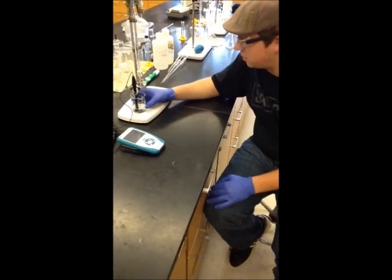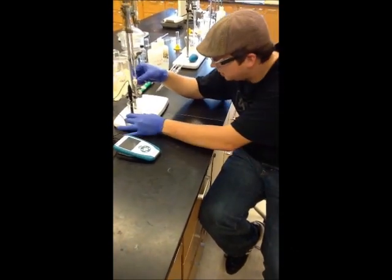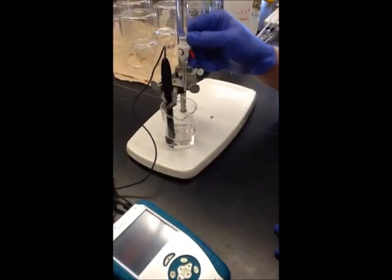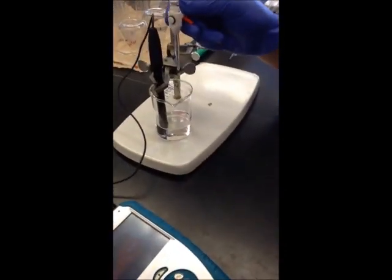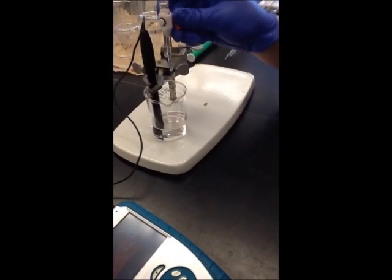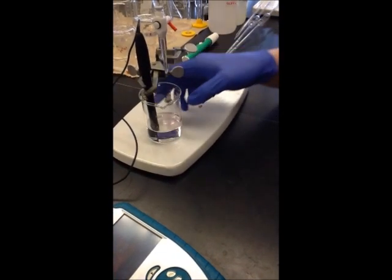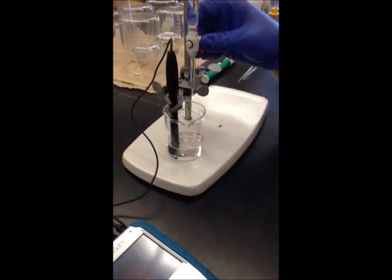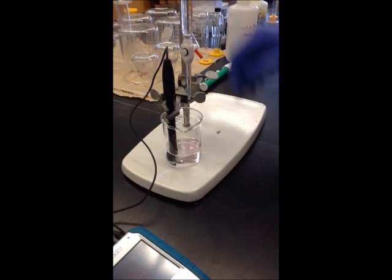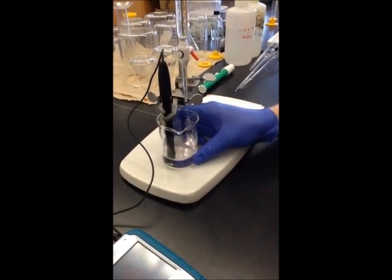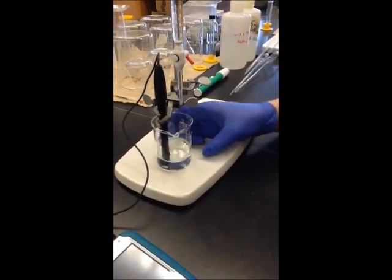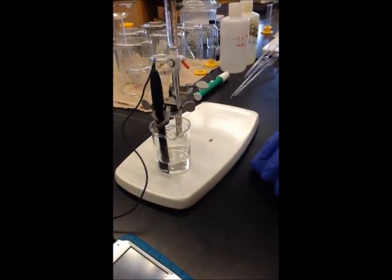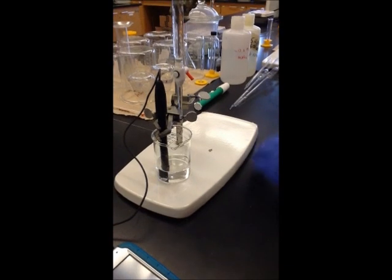As we approach the equivalence point, we're starting to see the purple color from the phenolphthalein indicator staying a little bit longer than usual in our solution. The purple color is very faint. You might not be able to see it on the video, but I assure you it is there. And we're actually having to stir the solution for it to go away, which means that we're getting closer and closer to our endpoint and our solution is becoming a lot less acidic.